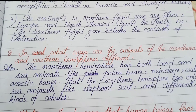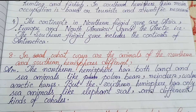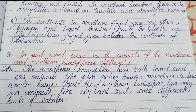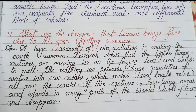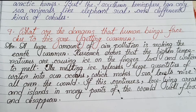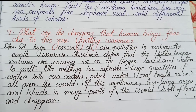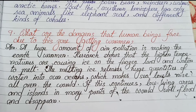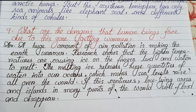Number eight: In what ways are the animals of the northern and southern hemispheres different? The northern hemisphere has both land and sea animals like polar bear, reindeer, walrus, and arctic hares. The southern hemisphere has only sea animals like elephant seal and different kinds of whales. Number nine: What are the dangers that human beings face due to this zone getting warmer? Air pollution is making the earth warmer. Higher temperatures are causing ice to melt, releasing huge quantities of water into the oceans, raising sea levels. Low-lying areas and islands will flood and disappear.